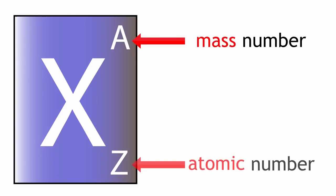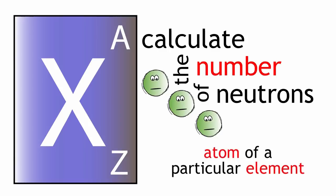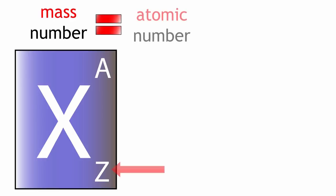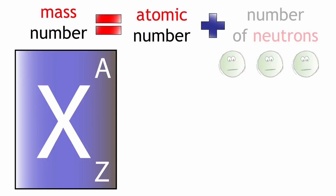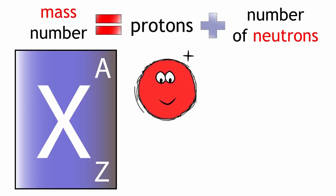So if we know the mass number of an element, and we know the atomic number, we can calculate the number of neutrons in an atom of a particular element. The mass number equals the atomic number plus the number of neutrons. The atomic number is just the number of protons in an atom. Therefore, mass number equals protons plus neutrons.